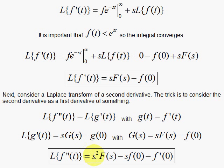s squared times capital F of s, and then s with the minus sign in front times f of 0. And then, over here, I have minus this thing, and what is that thing? Well, the g is the f prime, so g of 0 is f prime of 0.